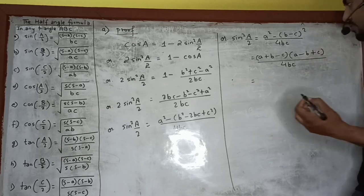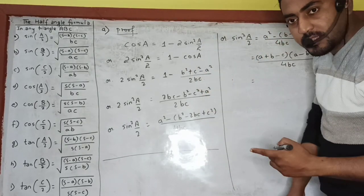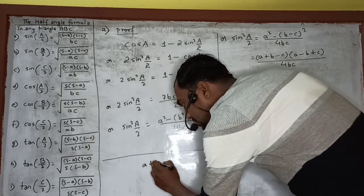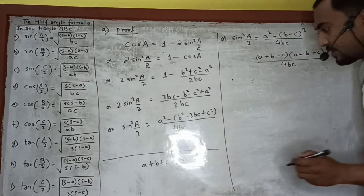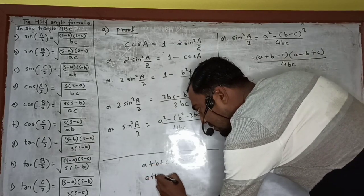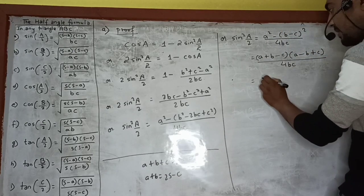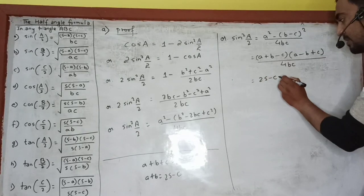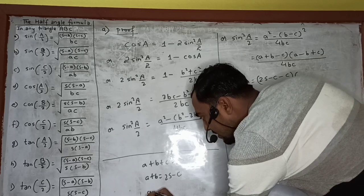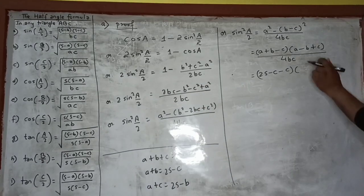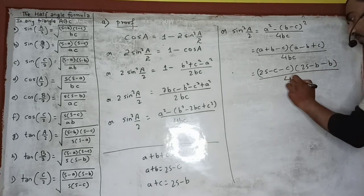Then, using the semi-perimeter relation A + B + C = 2S: A + B = 2S − C, so (A + B − C) = 2S − 2C. And A + C = 2S − B, so (A − B + C) = 2S − 2B. Substituting these, sin²(A/2) = (2S − 2C)(2S − 2B) / (4BC).